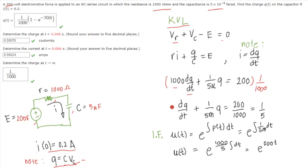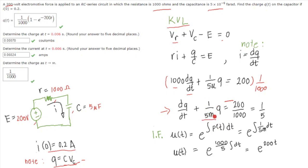We can see that our equation is a first-order linear differential equation, which can be solved using an integrating factor. We find our integrating factor mu of T, equal to e raised to the integral of P of T dt, where P of T is the coefficient of Q, which is 1 over 5 milli.